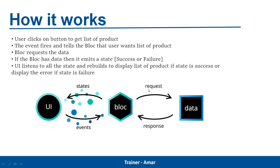The BLoC will send a request for the data. The BLoC can send the request to a repository, which in turn is connected to a data source with the help of an API. If the BLoC receives a response, it emits a state — that state can be a success or a failure. The UI listens to all the states and rebuilds itself.